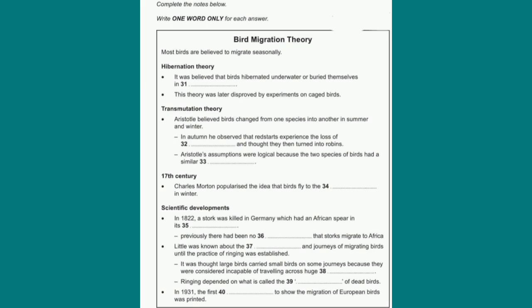The most bizarre theory was put forward by an English amateur scientist, Charles Morton, in the 17th century. He wrote a surprisingly well-regarded paper, claiming that birds migrate to the moon and back every year. He came to this conclusion as the only logical explanation for the total disappearance of some species.